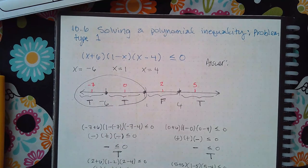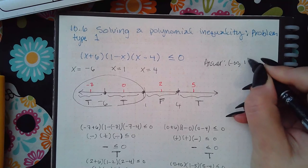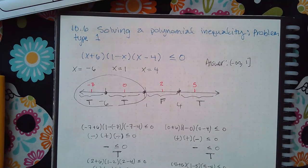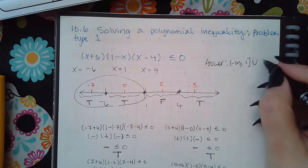And that is negative infinity all the way to one, and I use a bracket because there's a solid dot at one. Then I would also have to include this interval which would be from four to positive infinity.